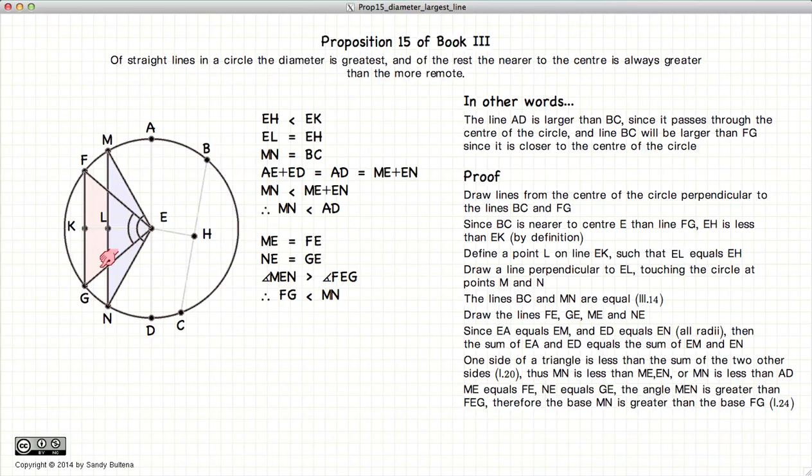If we have two triangles with two sides that are equal and two sides that are equal, and one has a larger angle than the other, the length opposite the one with the larger angle, in other words MN, will be larger. And this is all according to Proposition 24 of Book 1.